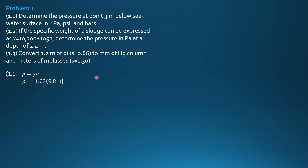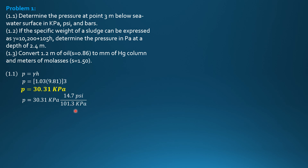So: 1.03 × 9.81 kN/m³ × 3 m gives a pressure of 30.31 kilopascals. Converting to psi: using the factor that 14.7 psi equals 101.3 kPa, we get 4.398 psi. Converting to bars: since 1 bar equals 100 kPa, we multiply by (1 bar / 100 kPa), giving 0.3031 bar.